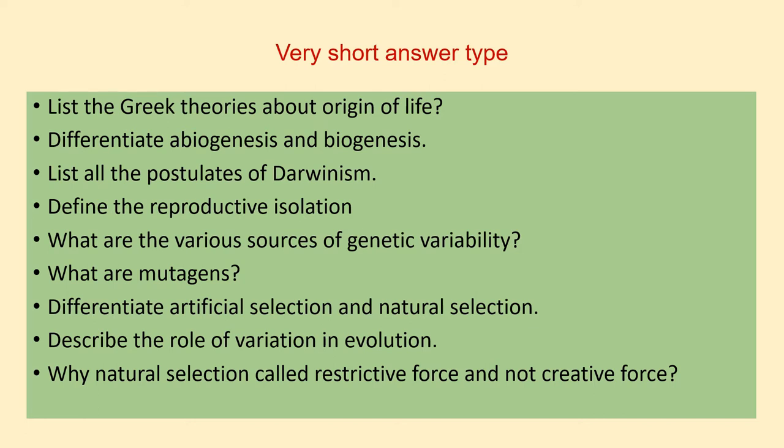Question three: list all the postulates of Darwinism. Question four: define reproductive isolation. The fifth question is: what are the various sources of genetic variability? The next question is: what are mutagens?